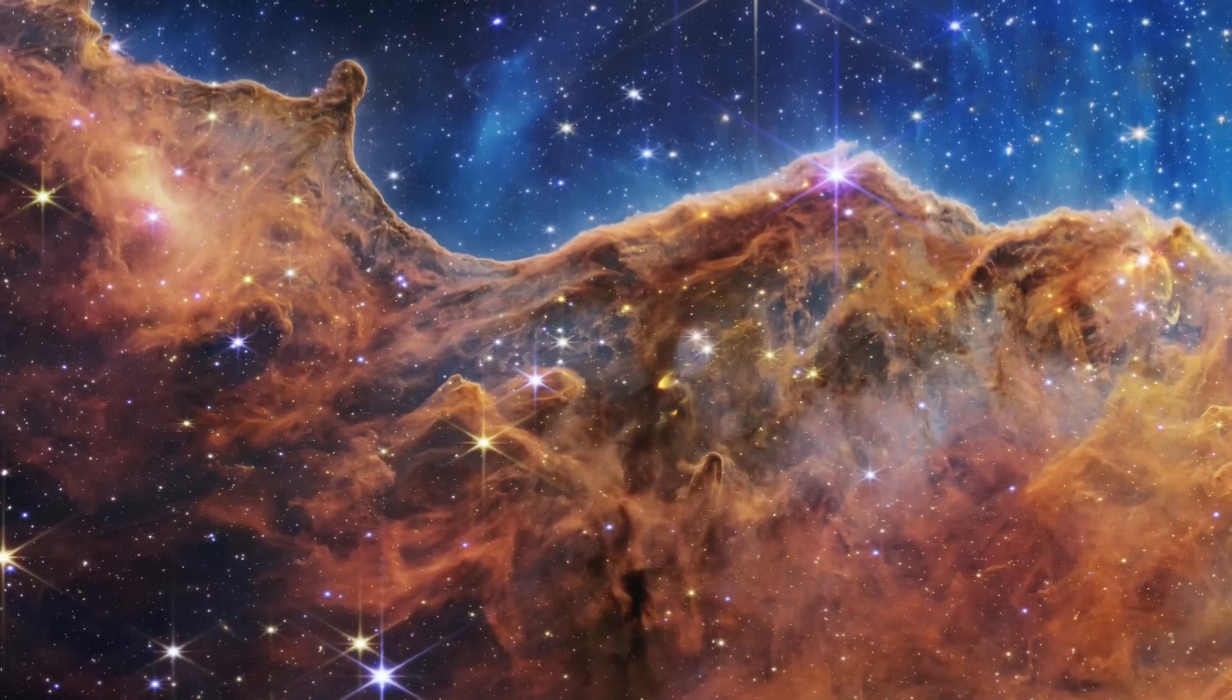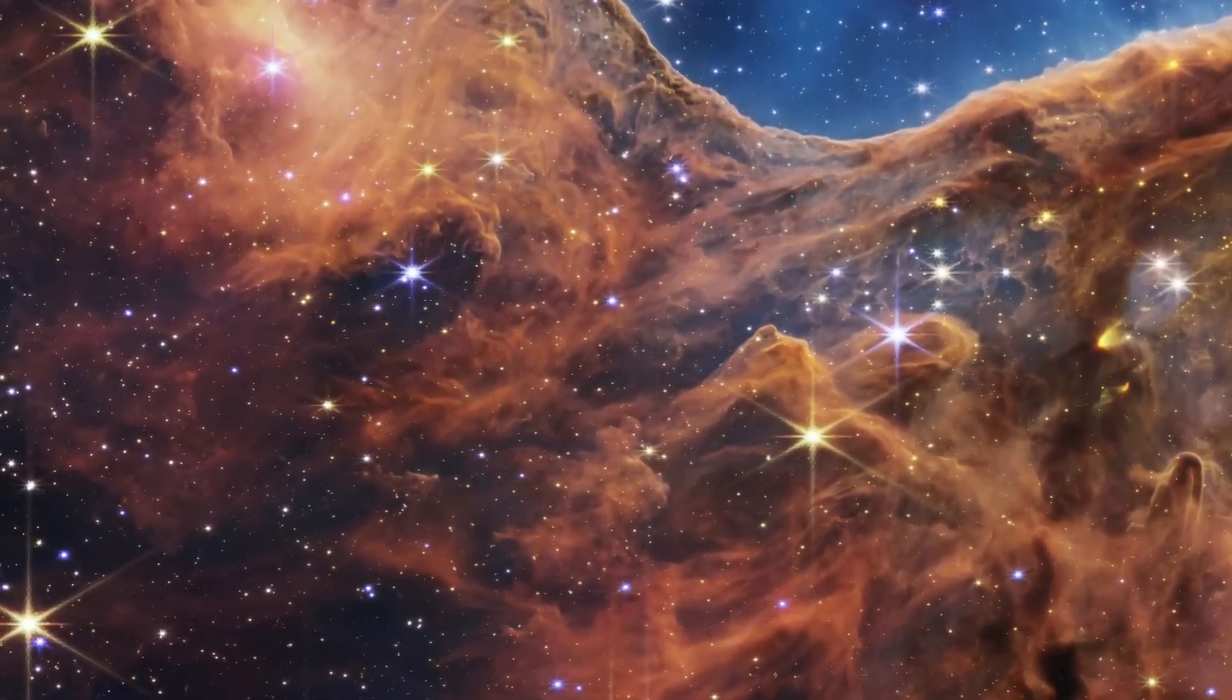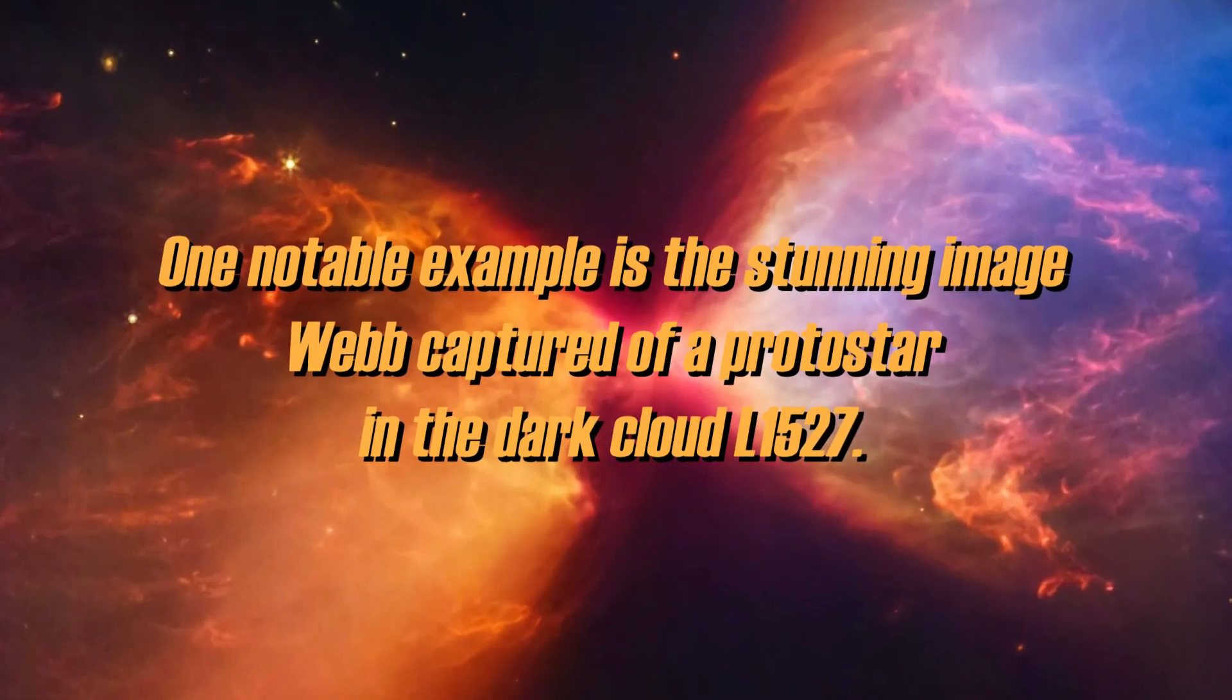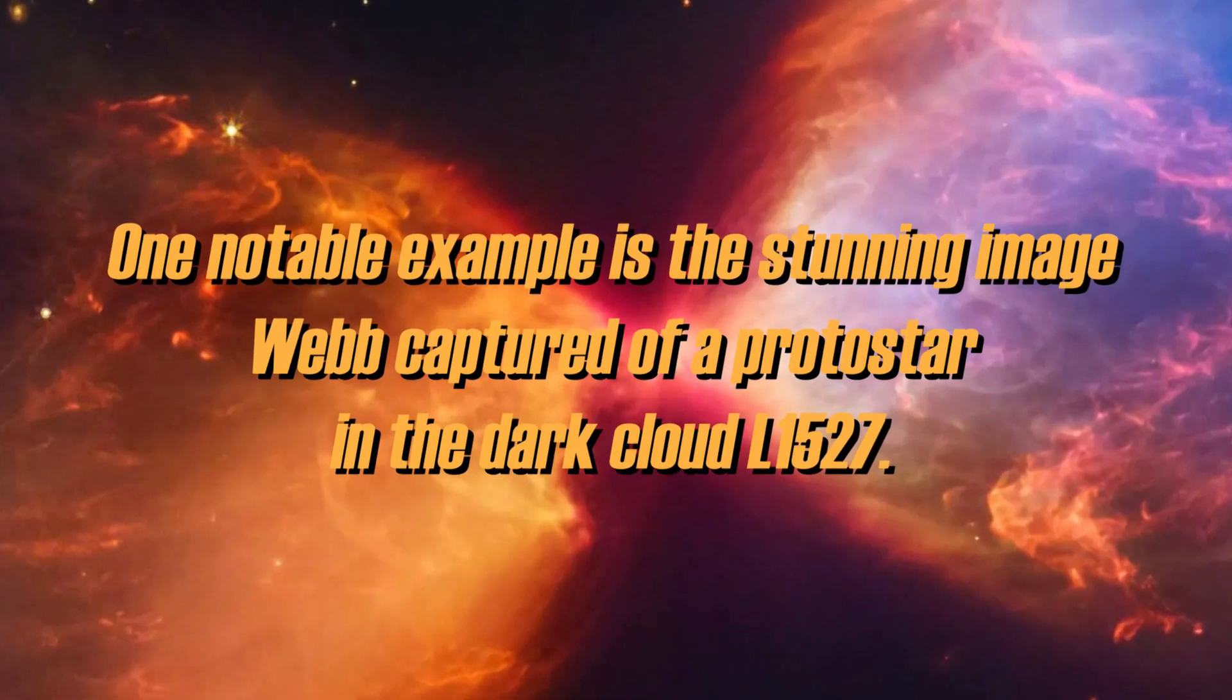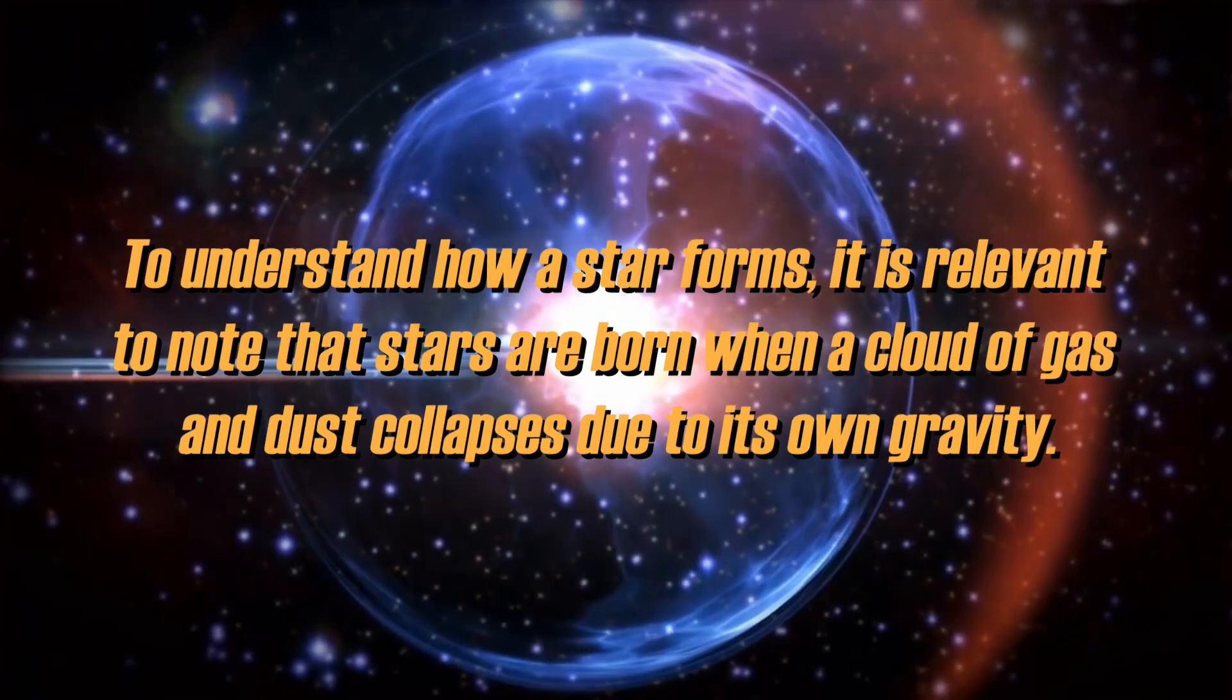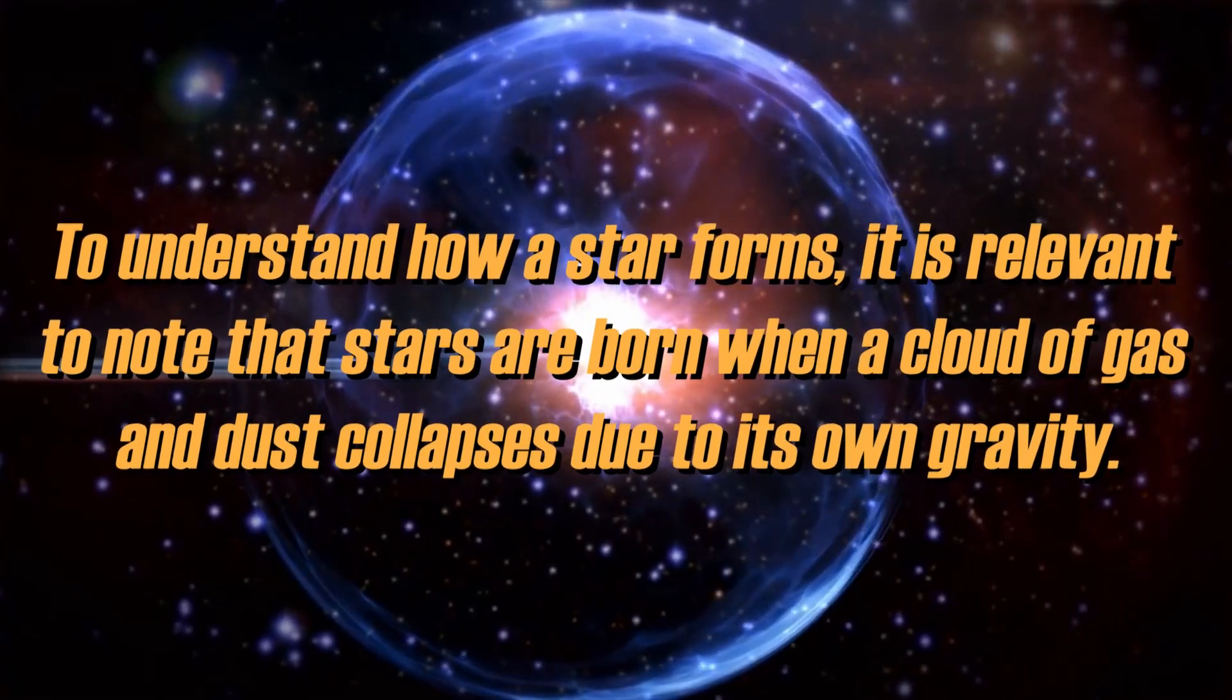In fact, many of the objects captured by Webb in the infrared spectrum were completely invisible in the earlier images. One notable example is the stunning image Webb captured of a protostar in the dark cloud L-1527. To understand how a star forms, it is relevant to note that stars are born when a cloud of gas and dust collapses due to its own gravity.